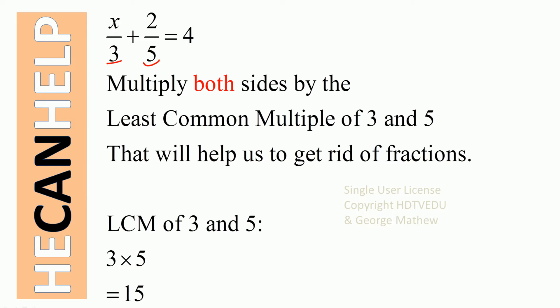We multiply both the left and right sides by the least common multiple of 3 and 5. What is the least common multiple of 3 and 5? 3 is already a prime number. 5 is already a prime number.